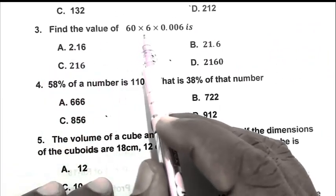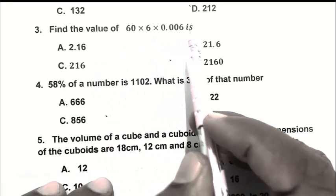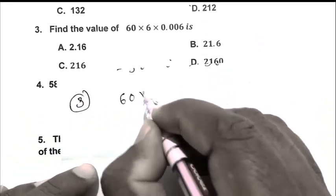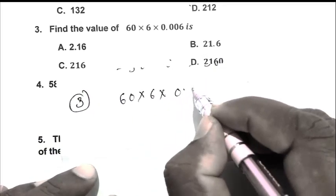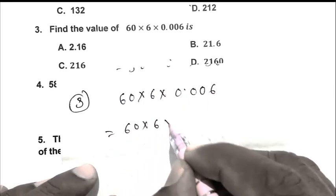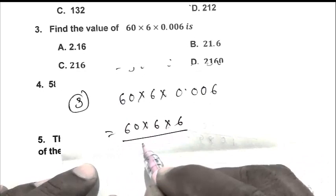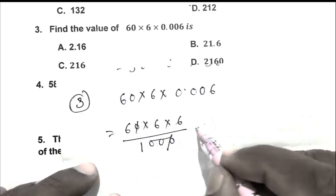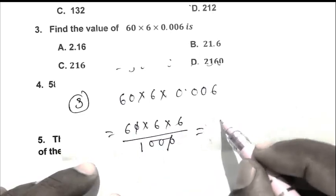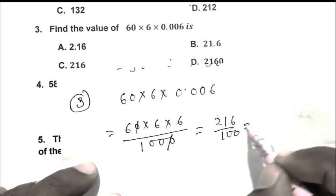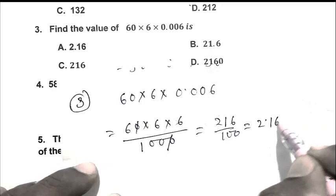So friend 98 minus 60 that is 38. So friend B is the right answer. Question number 3. Find the value of 60 multiplied by 6 multiplied by 0.006 is. So friend the expression is 60 multiplied by 6 multiplied by 0.006. So friend 60 multiplied by 6 multiplied by 6 upon 1000. Because we eliminate point. 216 upon 100 that is 2.16.